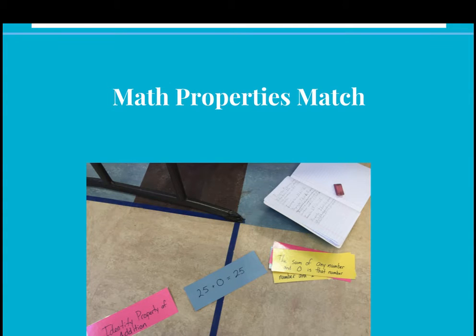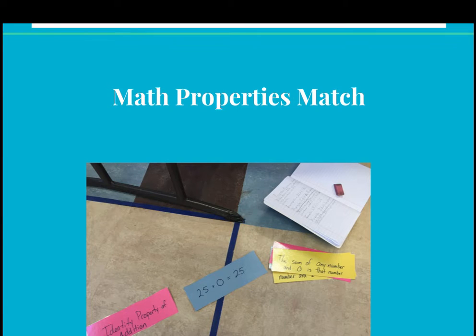This activity was called a Math Properties Match. Students had been working on several different properties in relationship to multiplication and division, and knowing the importance of properties, this activity specifically involved finding the definition, example, and name of the property, then matching those and recording them in their math journals or notebooks.